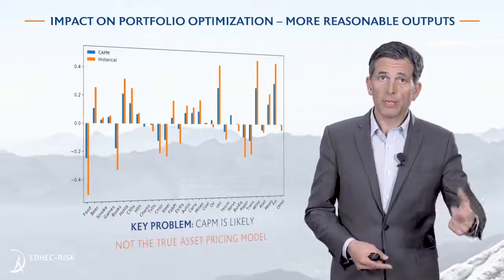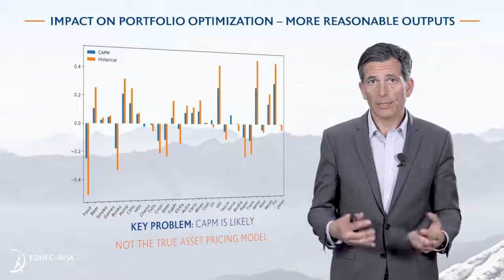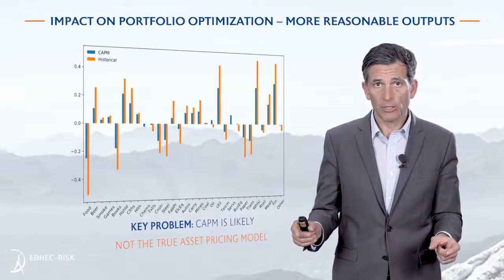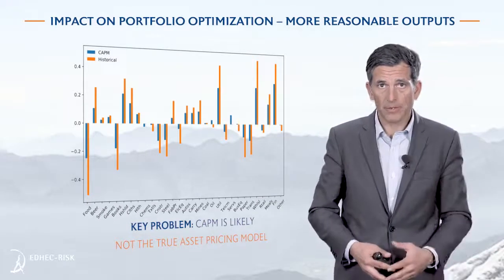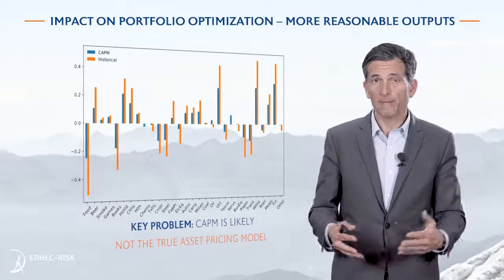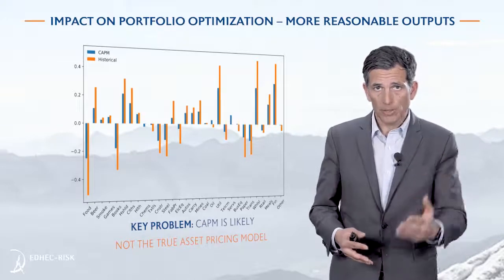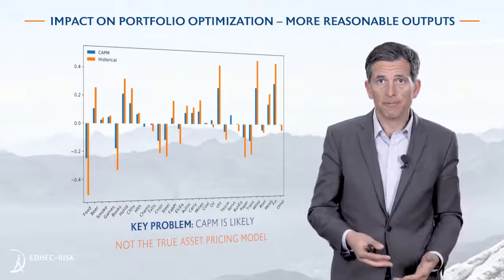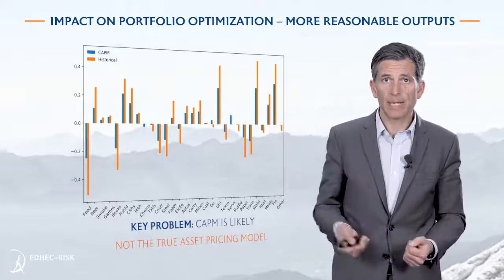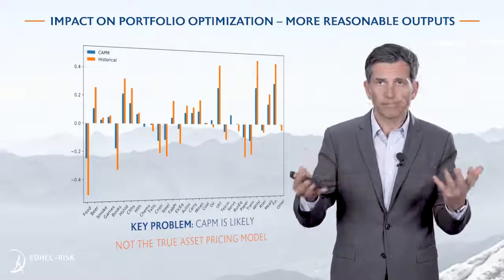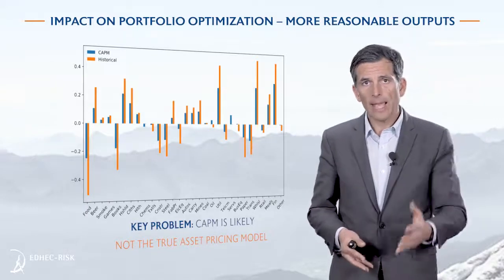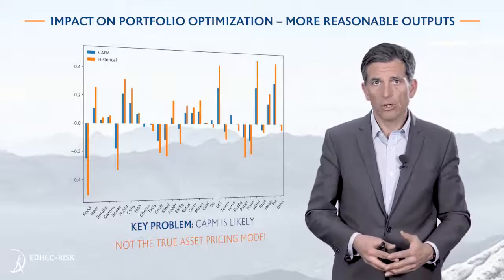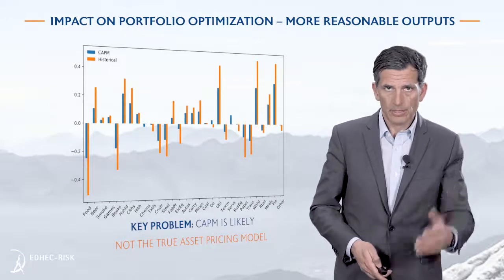These more reasonable expected return estimates translate into more reasonable portfolios. If you maximize Sharpe ratios based on either CAPM-based or historical mean expected returns using the same sample covariance matrix, you get very different portfolio weights. The historical-mean-based weights, shown in orange on this graph, show a much broader variation — some as low as minus 50 percent or worse, with the most positive above 50 percent. That is clearly an extreme, not well-balanced portfolio. The CAPM-based estimates, because they are more reasonable, give a much better-behaved portfolio, though some short positions remain to be dealt with later.